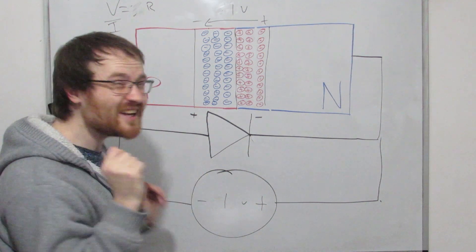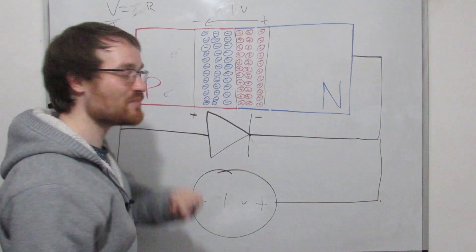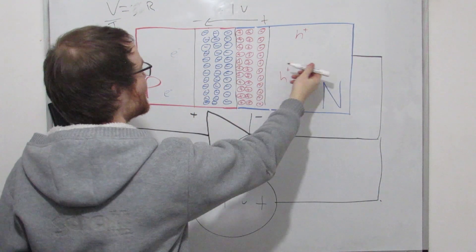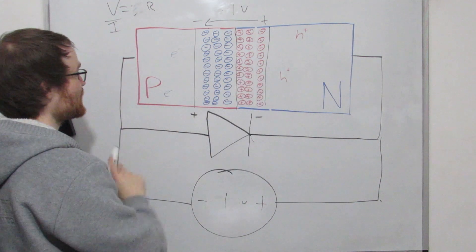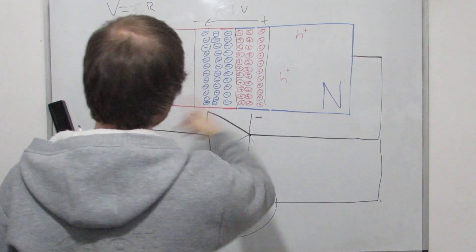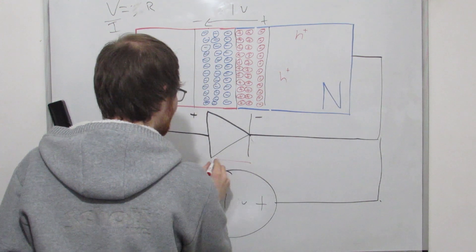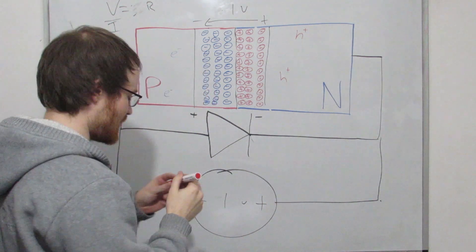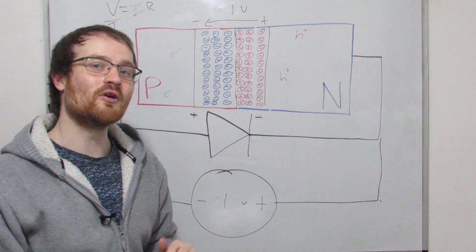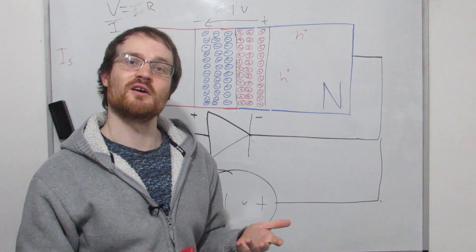A very small current does flow in reverse bias. There are some sneaky electrons in the P-type — not many — we call them minority carriers, and there are a couple of minority holes in the N-type. Holes want to move in the direction of the electric field and electrons want to move against it, so these minority carriers are actually happy under reverse bias. They get swept across — holes one way, electrons the other — creating a tiny conventional current we call reverse leakage current.